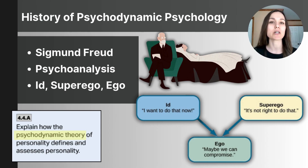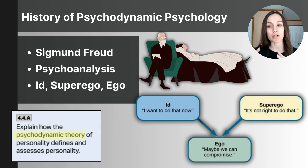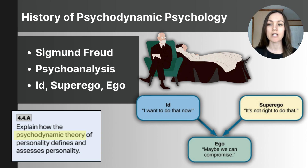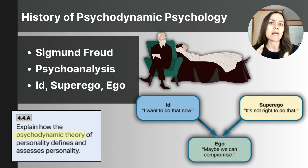Freud believed that the mind was structured into three parts: the id, the ego, and the superego. The id is the part that developed first — it seeks immediate pleasure and satisfaction and is driven by our basic needs and desires. The superego acts on a moral compass and conscience, guiding us with ideals and societal rules, helping us feel guilty when we do something wrong and proud when we do something right.